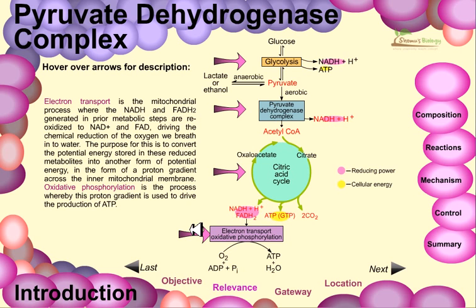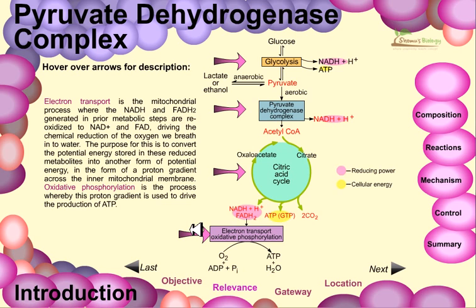The electron transport system is a mitochondrial process where NADH and FADH2 generated in prior metabolic steps are oxidized to NAD+ and FAD+, driving the reduction of oxygen we breathe to water. The terminal electron receptor is oxygen. The purpose is to convert the potential energy stored in these reduced metabolites into a proton gradient across the inner mitochondrial membrane. Oxidative phosphorylation then uses this proton gradient to drive ATP production.